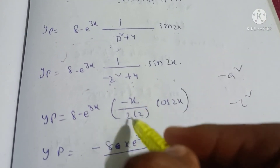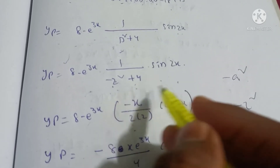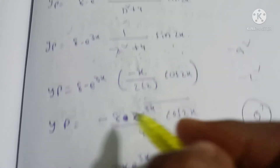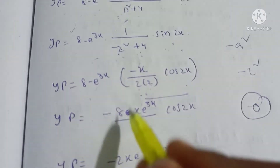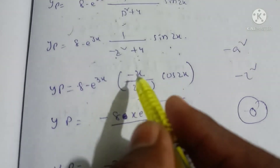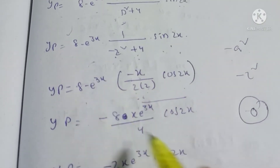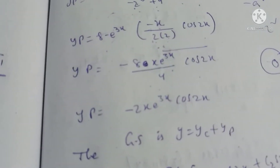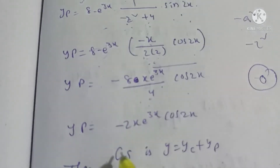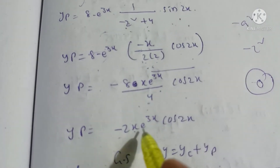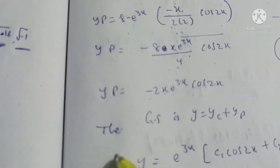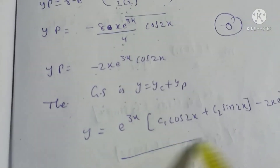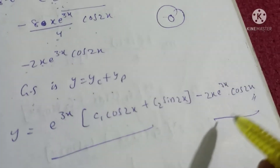Using the repeated root formula, the result is minus x divided by 2 times D applied to sin(2x), giving cos(2x). Therefore yp equals minus 8·e^(3x)·x·cos(2x) divided by (2 times 4), which simplifies to yp equals minus x·e^(3x)·cos(2x) divided by 2. The general solution is y equals yc plus yp, substituting the values of yc and yp accordingly.